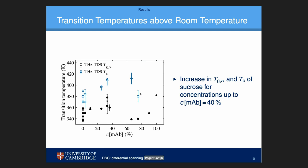To make it more complicated, we also observed other transition temperatures. If I plot the Tg_alpha measured with terahertz spectroscopy on the same graph, we see that below 40% antibody it follows the trend of the crystallization temperature — there is an increase in Tg_alpha as we increase the antibody concentration.